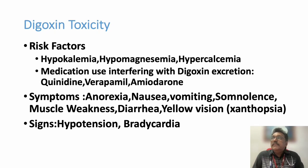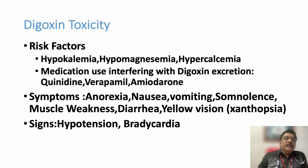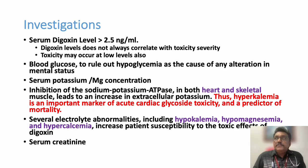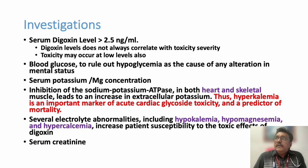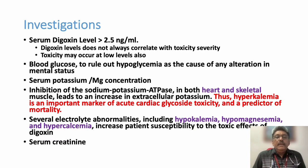Any patient on Digoxin, especially with renal failure, presenting with severe nausea, vomiting, or abdominal pain — think about Digoxin toxicity. Other findings like hypotension and bradycardia are also common. Once you suspect Digoxin toxicity, always take an ECG. Almost all arrhythmias — including bigeminy, trigeminy, and paroxysmal atrial tachycardia — are common. Hyperkalemia is a marker of acute cardiac glycoside toxicity and a predictor of mortality.